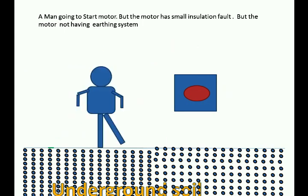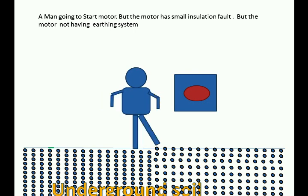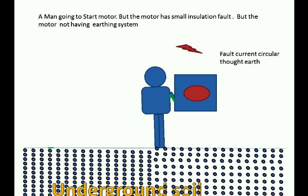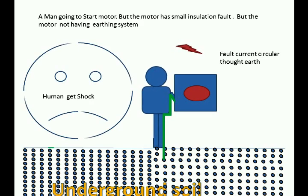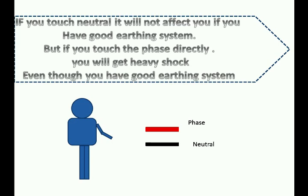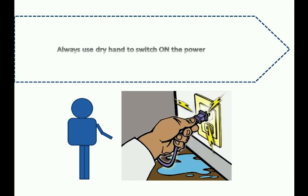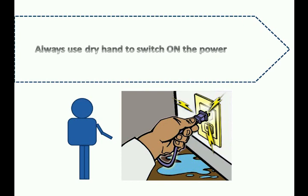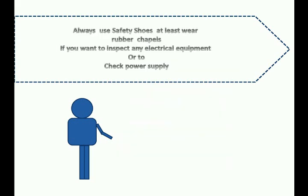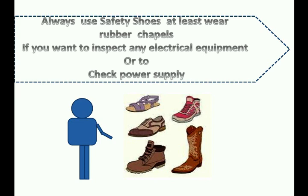In the other case, if the same fault happens but the motor does not have body earthing, the fault current has only one option — to flow through your body. Also, if you touch the neutral, it will not affect you if you have a good earthing system. But if you touch the phase directly, you will get a heavy shock. Even with a good earthing system, always use dry hands to switch on the power, because wet hands lower your body resistance, and if there is any fault, some current will be shared with you along with the earthing system and you will still get a shock.